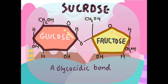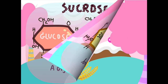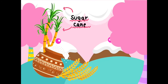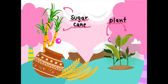Sucrose is a disaccharide containing two monosaccharides — glucose and fructose — combined with each other. Its chemical structure is composed of 12 atoms of carbon and 12 atoms of hydrogen. Sucrose is commonly farmed from plants and sugar cane.